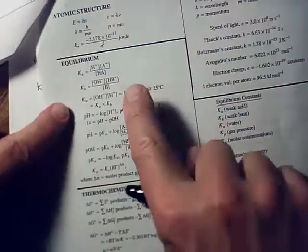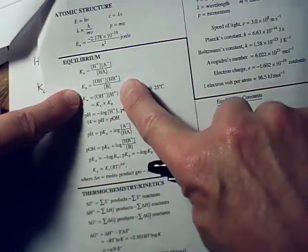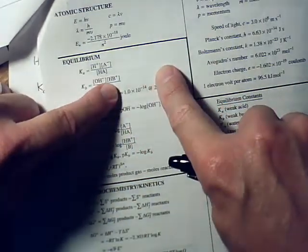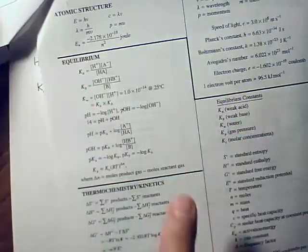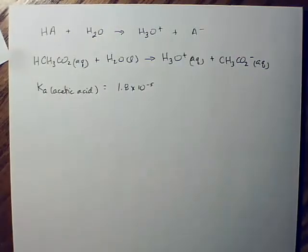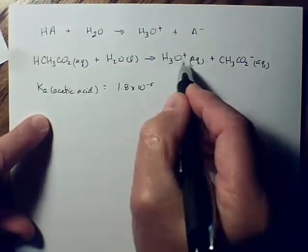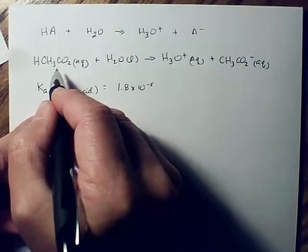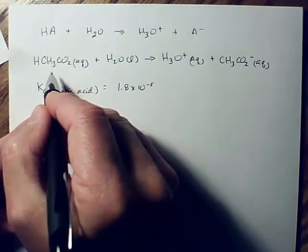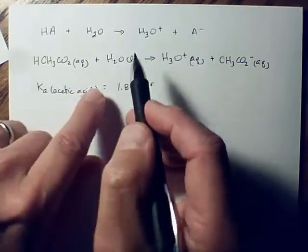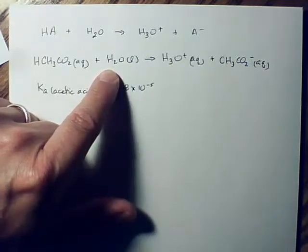There it is right there. There's the expression. This part right here is the expression between my fingers. Here's the value. This has a value, but it also has an expression. And the expression for a Ka is products over reactants. Always products over reactants, molar concentrations.